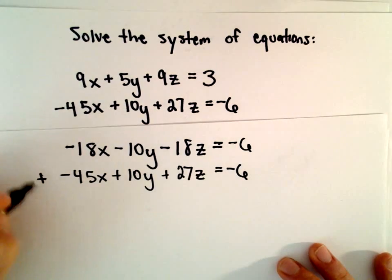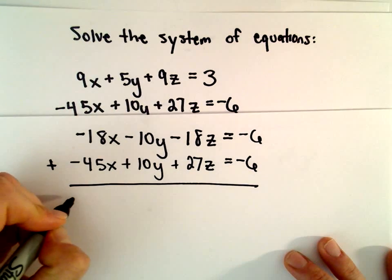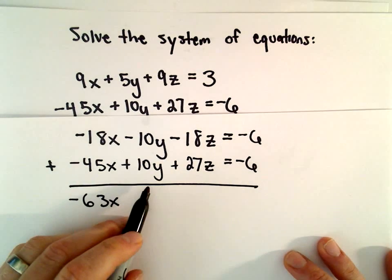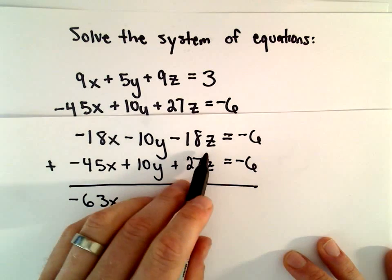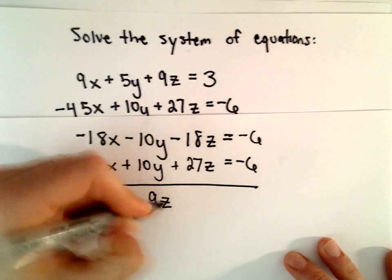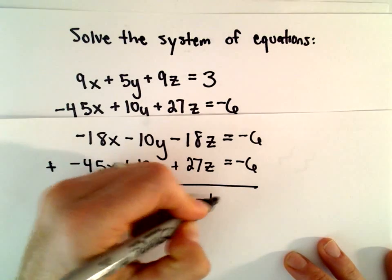Now I'm going to add these two equations together. Negative 18 plus negative 45, that's going to be negative 63x. The terms involving y cancel. Negative 18z plus 27z will be positive 9z. And negative 6 plus negative 6 will be negative 12.